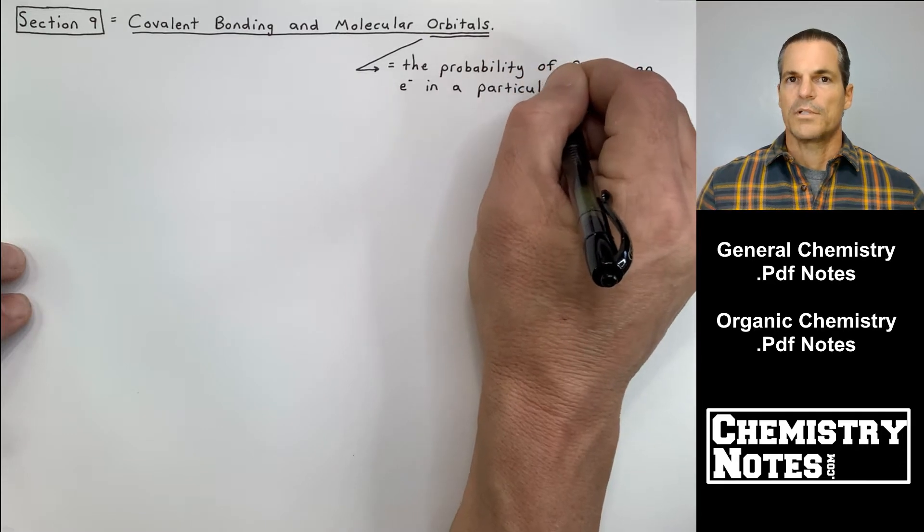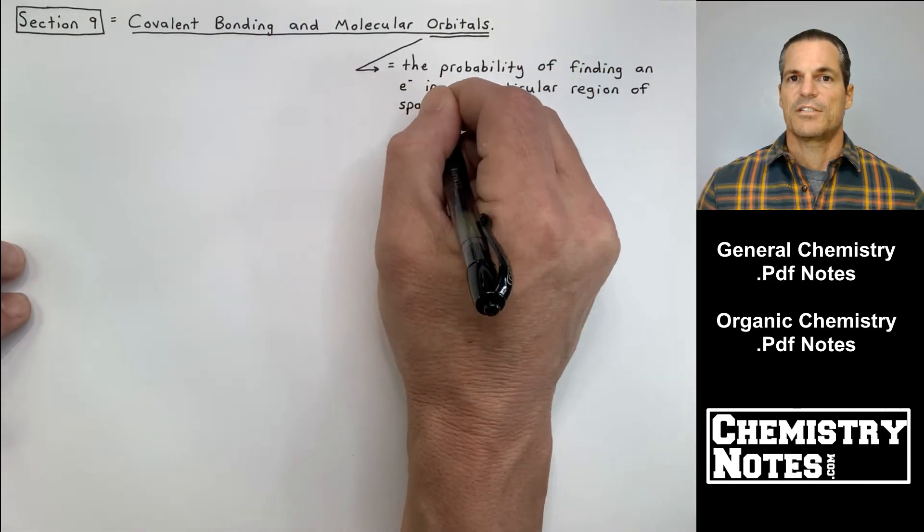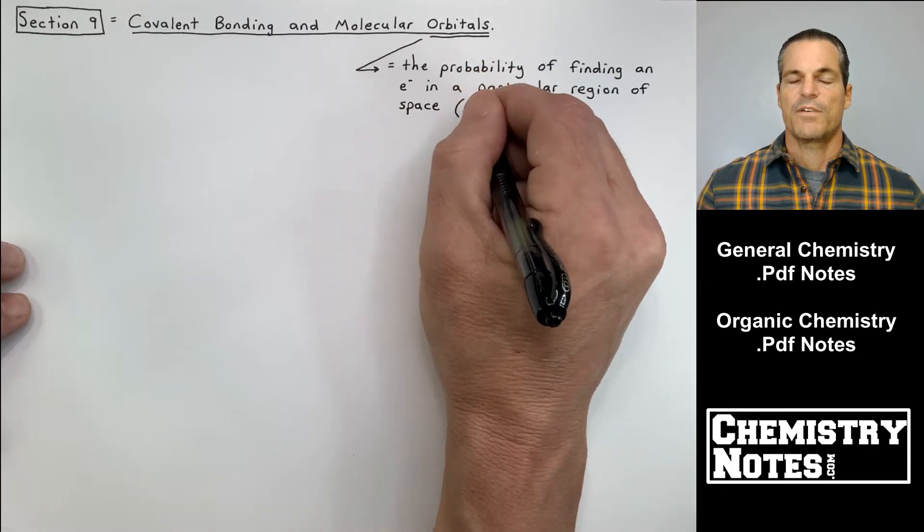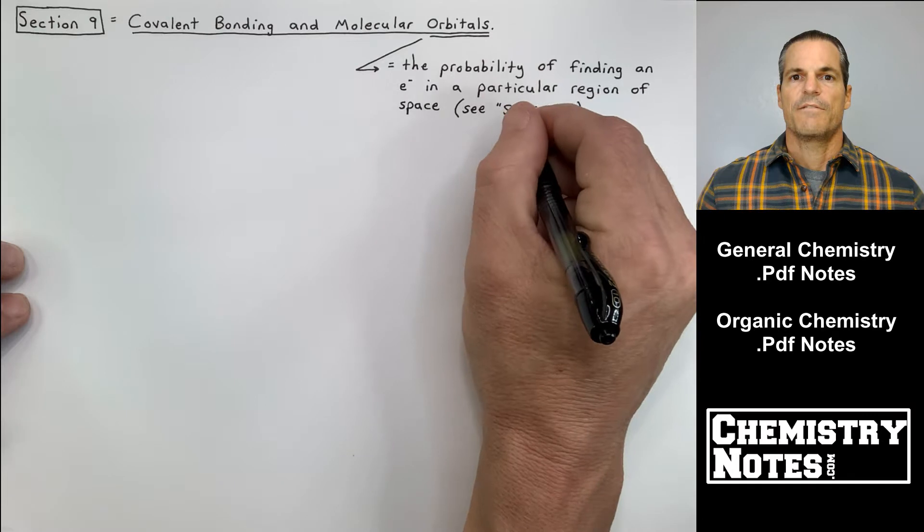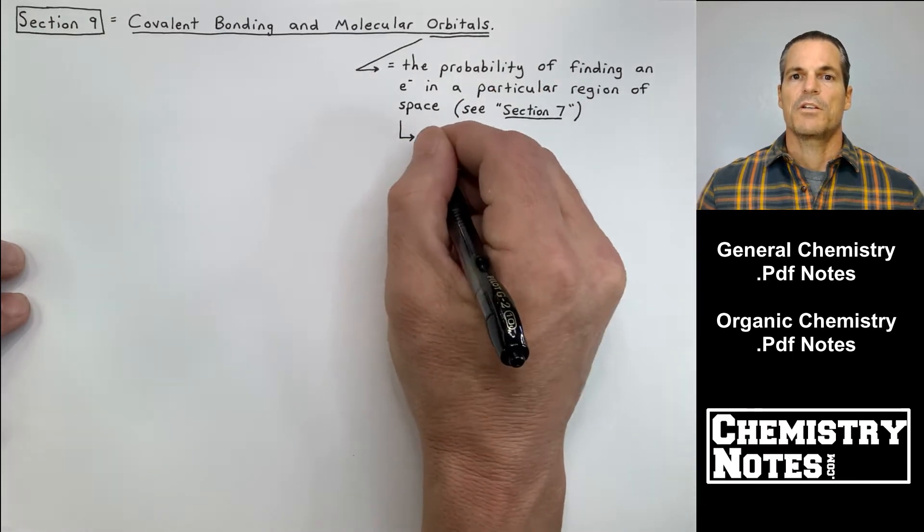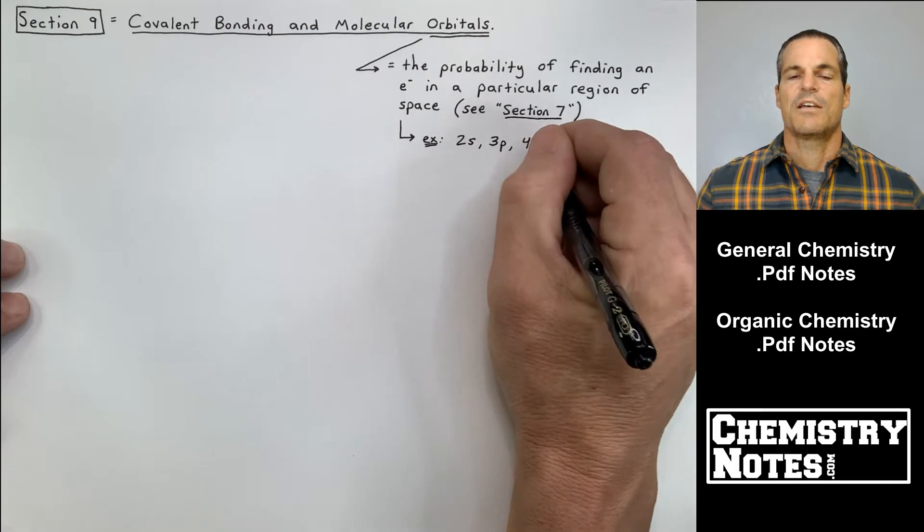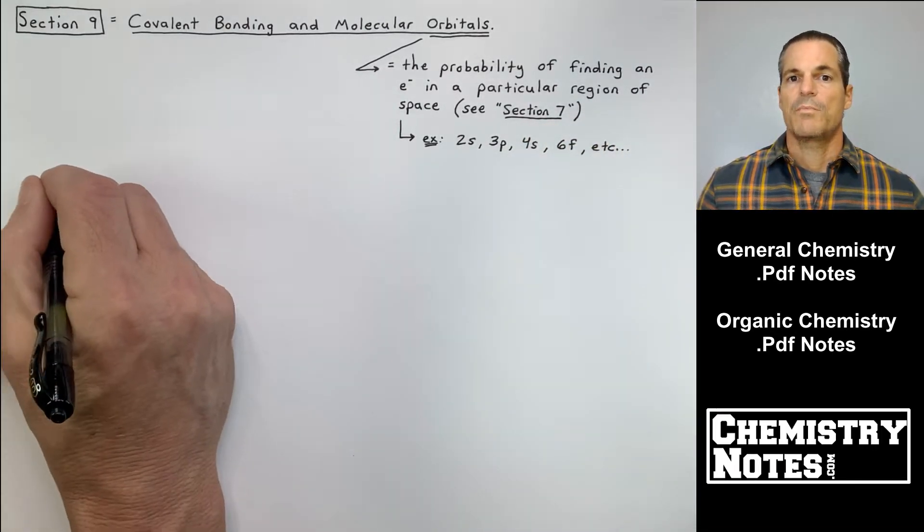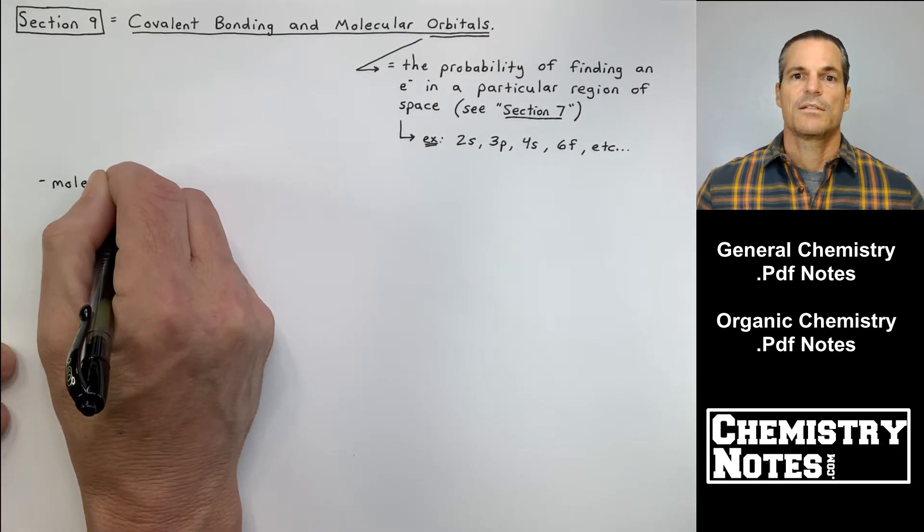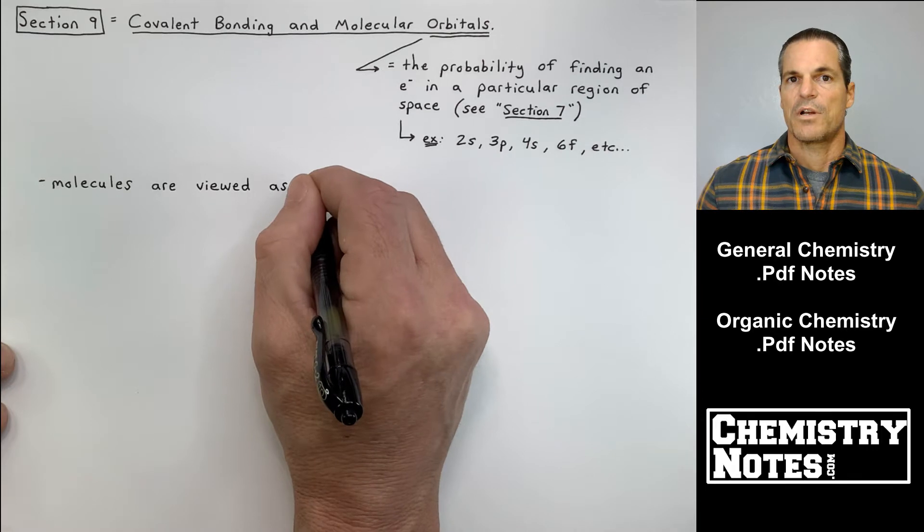Orbitals we talked about earlier in section 7 when we discussed electron configurations. Orbitals are the probability of finding an electron in a particular region of space. See section 7, but some examples of atomic orbitals are the 2s, 3p, 4s, 6f, etc. And we learned about those when we did electron configurations.